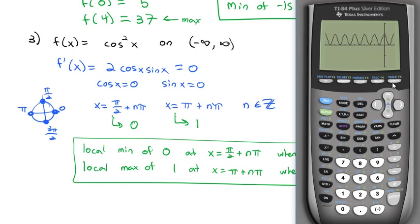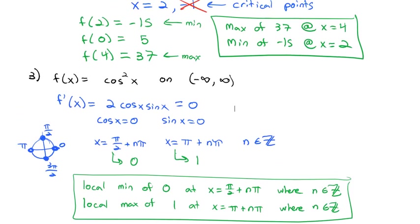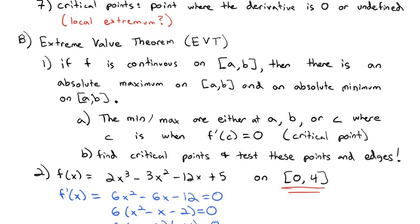That's the big idea for today: the Extreme Value Theorem. If f is continuous, all we need to do is find the critical points and check the edges — one of those will be the absolute min, and one will be the absolute max. Take a look at it on the homework today, and we will see you in class to talk about the Extreme Value Theorem a little bit more.